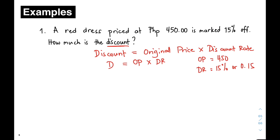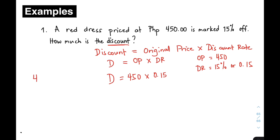Since we have the original price and DR ready, all we need to do is substitute those values into the formula: D = OP × DR. So that will be D = 450 × 0.15. We need to multiply these numbers. So: 5 times 0 is 0; 5 times 5 is 25, write 5 carry 2; 5 times 4 is 20 plus 2 is 22. Then: 1 times 0 is 0; 1 times 5 is 5; 1 times 4 is 4.